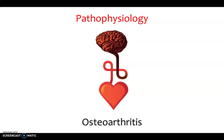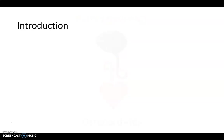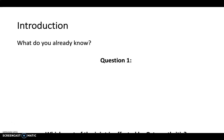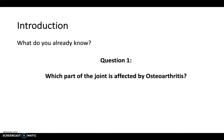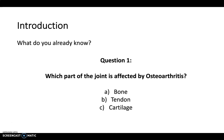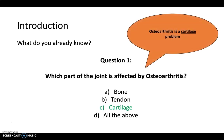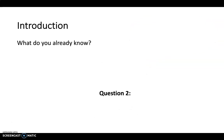Welcome to another pathophysiology video. Today we're going to look at osteoarthritis. Before we get started, let's find out what you already know. Question one: which part of the joint is affected by osteoarthritis — the bone, the tendon, the cartilage, or all of the above? The answer is C: osteoarthritis is a cartilage problem.